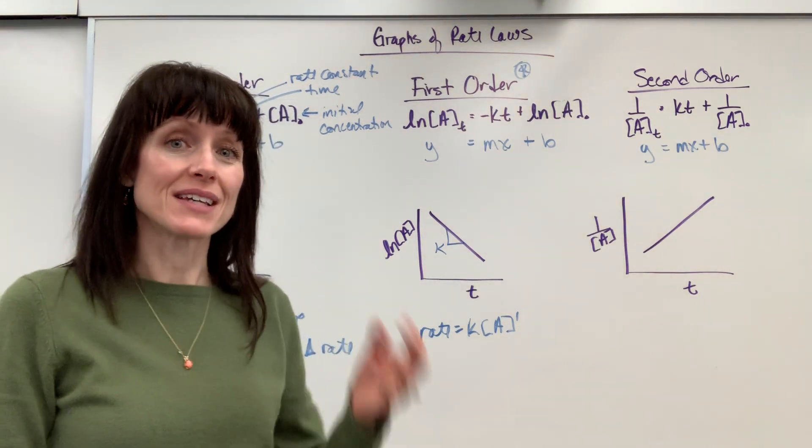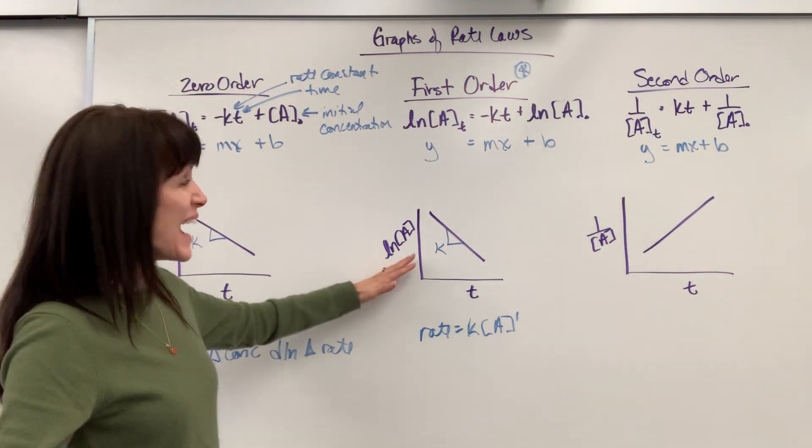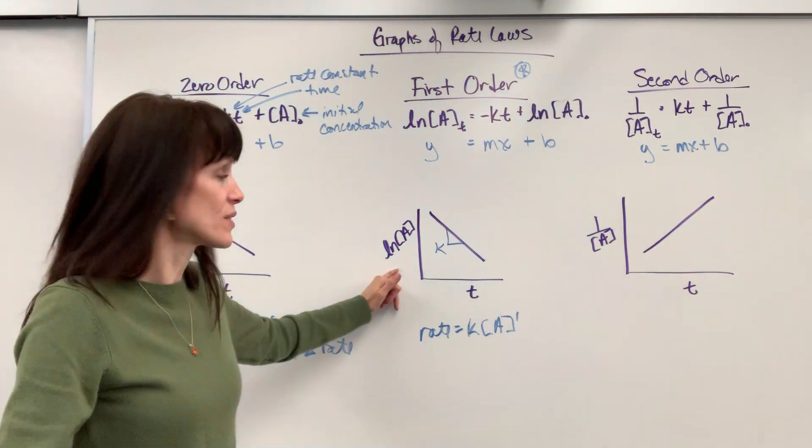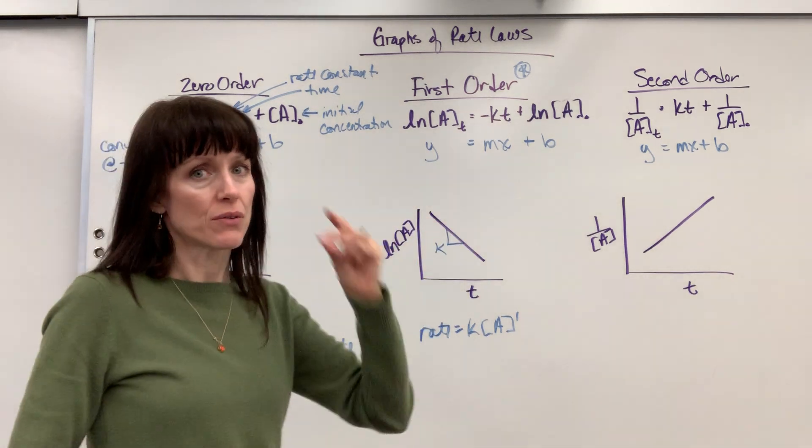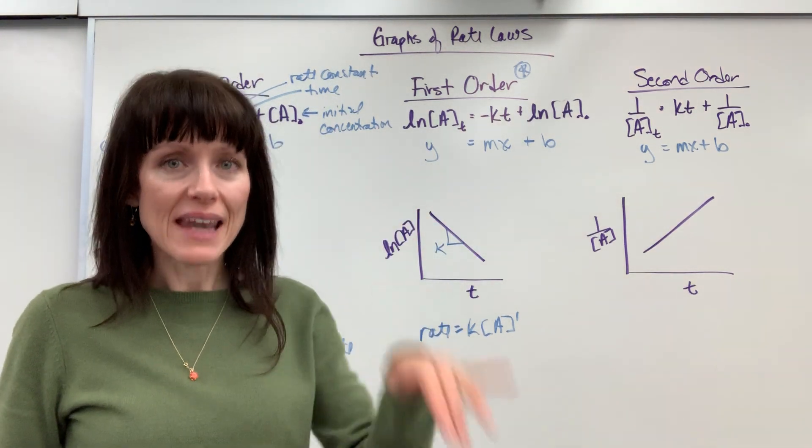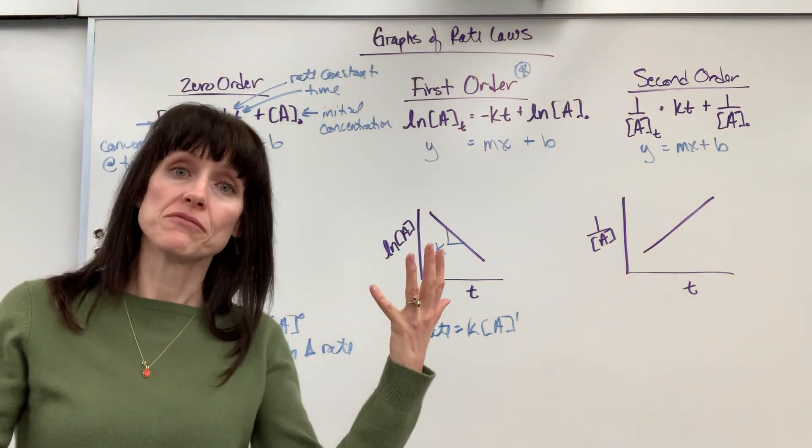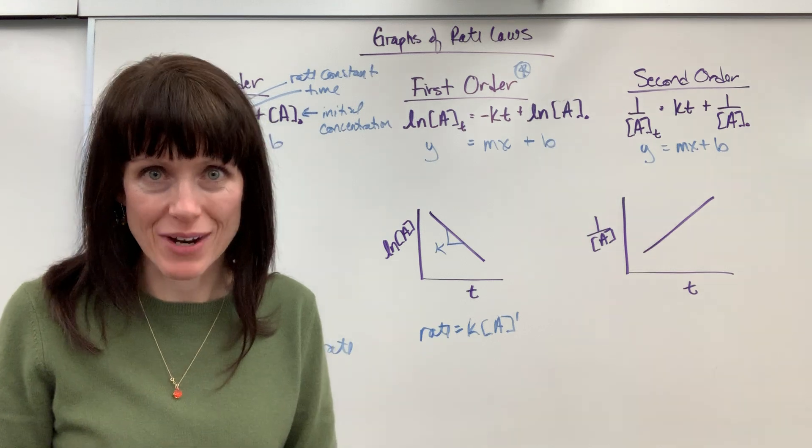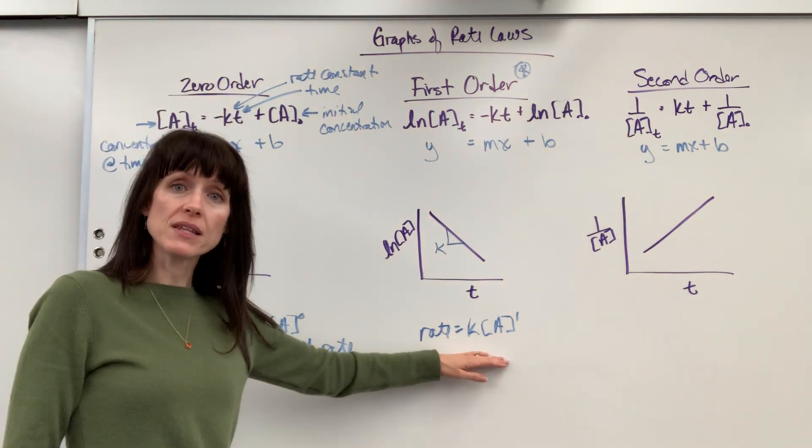You could be given graphs and here's what you've got to clue into: the axes. When you see natural log of the concentration of A, that means that this is first order. Right away, if you see a linear negative slope with natural log of A as the y-axis, you go "oh, first order." You have that memorized. This is a first order reaction.